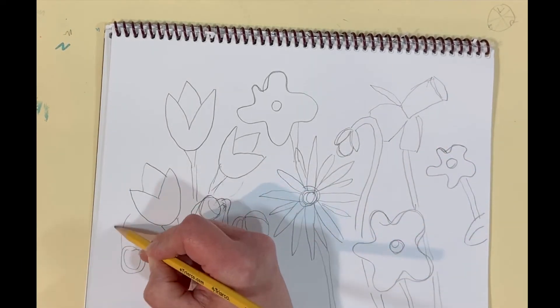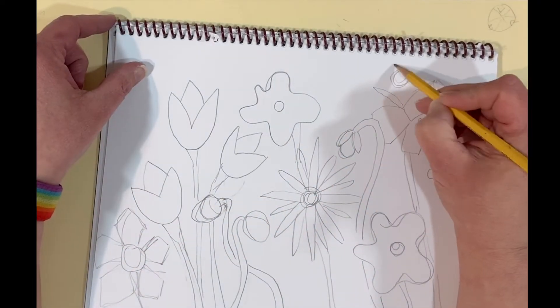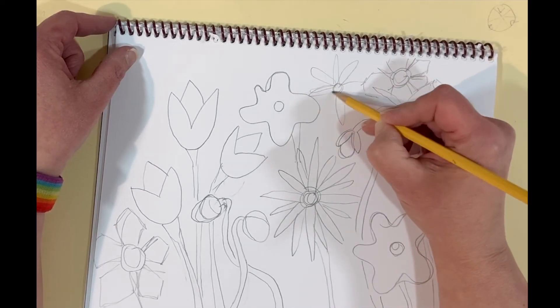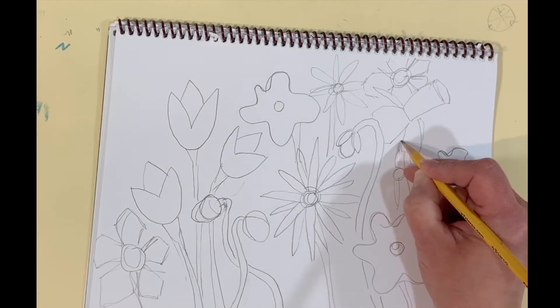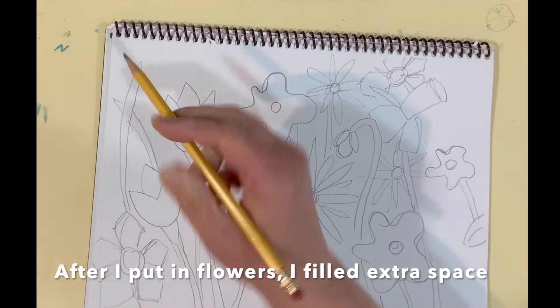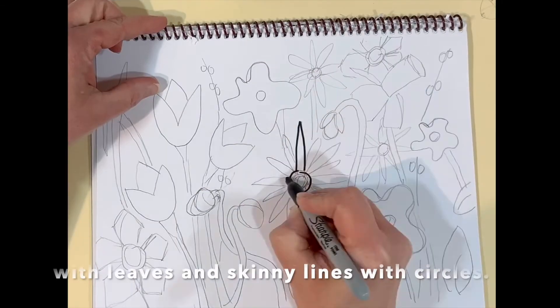When you're making your doodles or your flowers you can use a big piece of paper like I did, but you could also use a small piece of paper. Maybe you could make your flowers on the bottom and you could fold it in half and turn it into a card. Think about who you could send your flowers to, who might really like to get something from you.